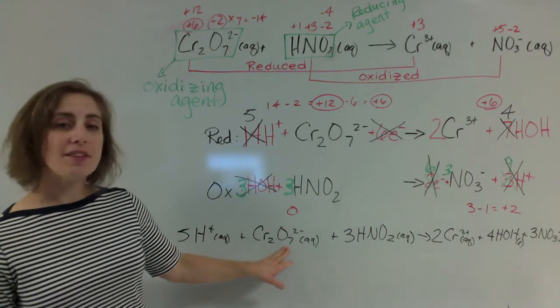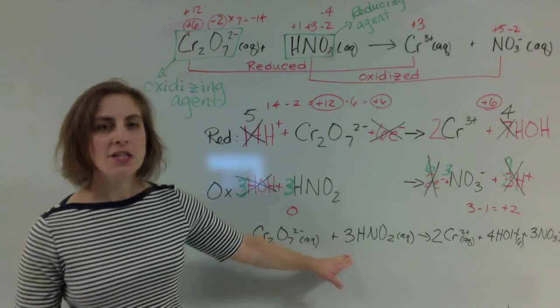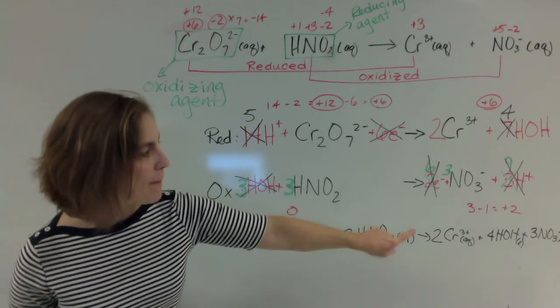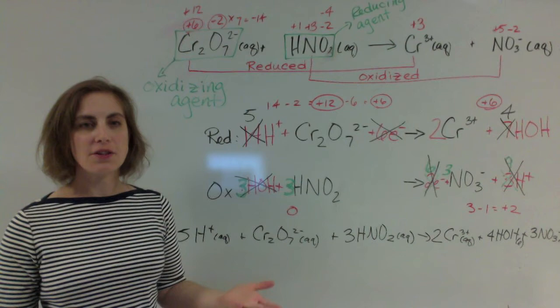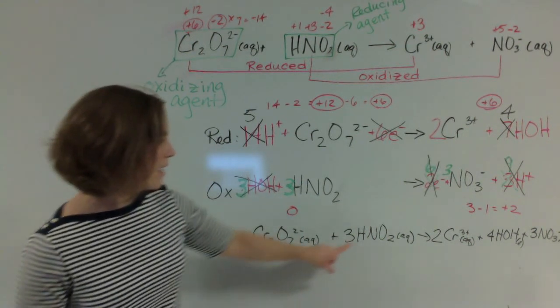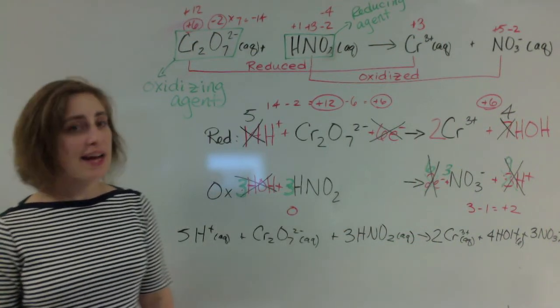Oxygen. We've got seven oxygens from the dichromate. We've got another six from these three nitrous acids. So that's 13 oxygens on this side. And that's going to be four plus nine, which will be 13 oxygens on that side. Finally, we have our nitrogens. Three nitrogens here. Three nitrogens from that nitrate. Our atoms are balanced.